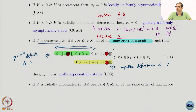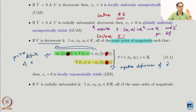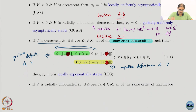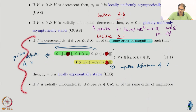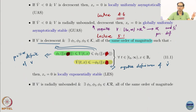For nonlinear systems, none of these properties are easy to obtain — nothing is free. When you go to exponential properties, they are naturally uniform. Also, if your dynamical system's right-hand side does not explicitly contain time, then uniformity is free.